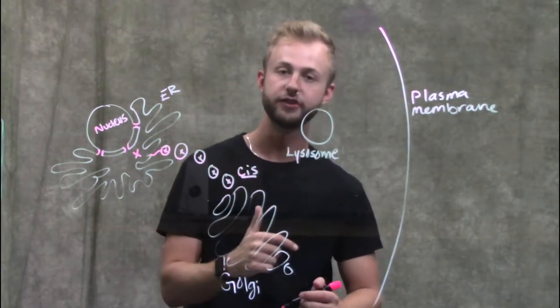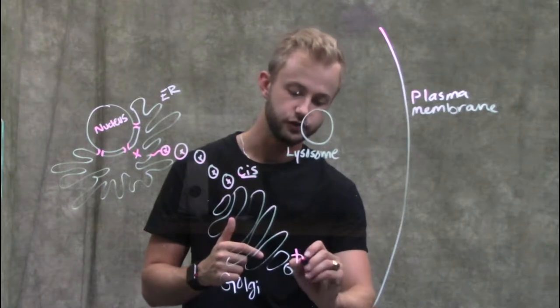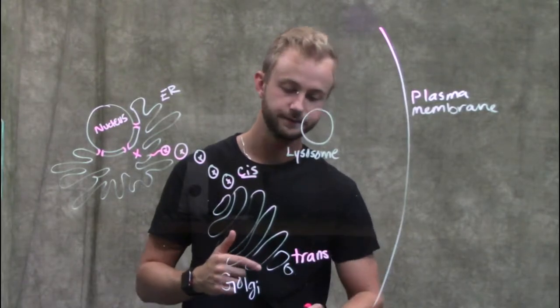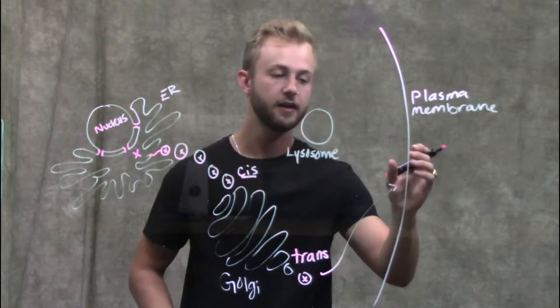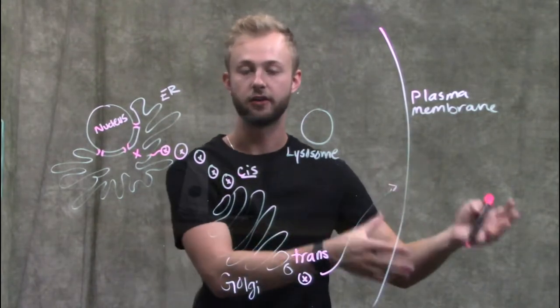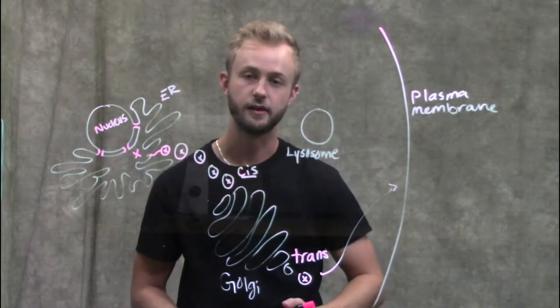At the end we'll package it into another vesicle at the trans face of the Golgi body, and there it will break off. From there it can go to the plasma membrane and fuse with the membrane to empty the contents of the vesicle on the outside of the cell.